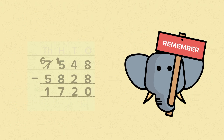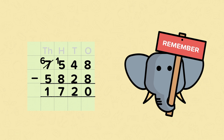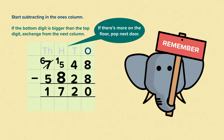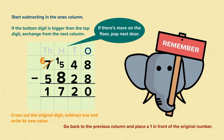So remember, when using the column method for subtraction, always start subtracting in the ones column. If the bottom digit is bigger than the top digit, you need to exchange from the next column. Remember: if there's more on the floor, pop next door. Then you need to cross out the original digit, subtract one, and write its new value. Then go back to the previous column and place a one in front of the original number.